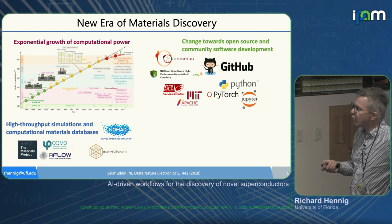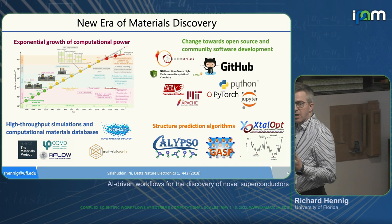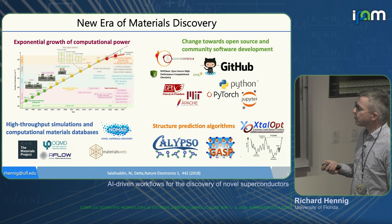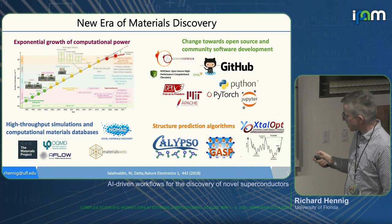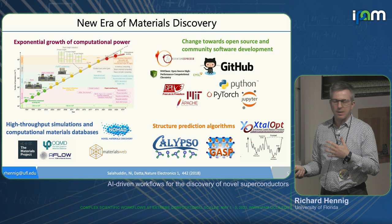Since I'm interested in structure discovery, I have to mention genetic algorithms and structure prediction algorithms. There are many available: CrystalOpt, CALYPSO, and our own GASP code. All with documentation and examples — you just go to GitHub and download them. Some are written in Python, making them really easy to implement in your workflow.